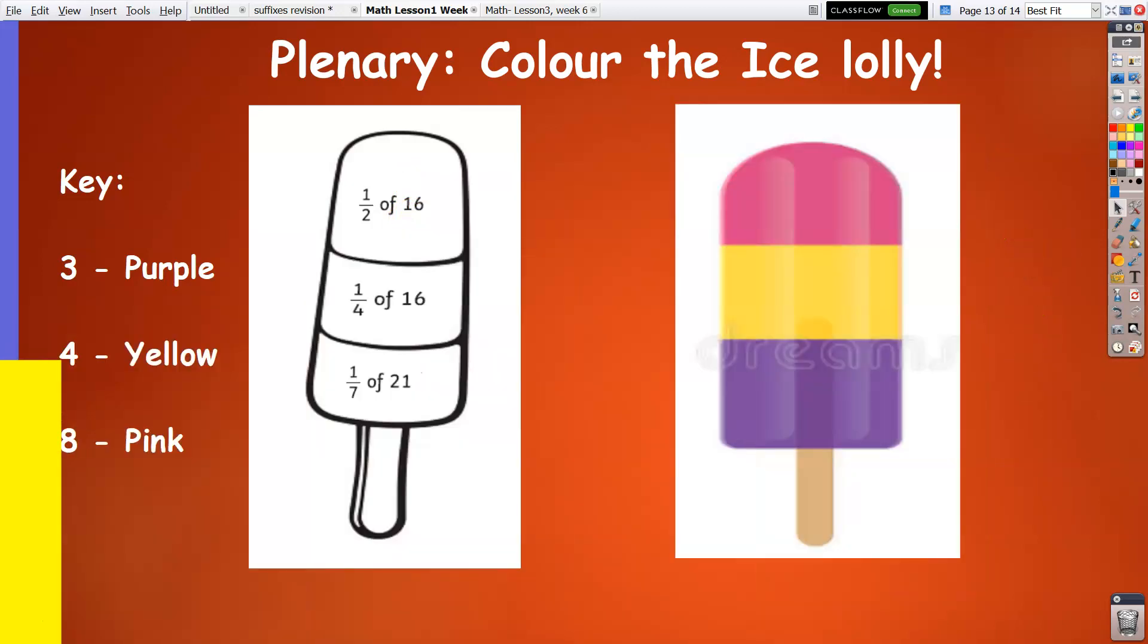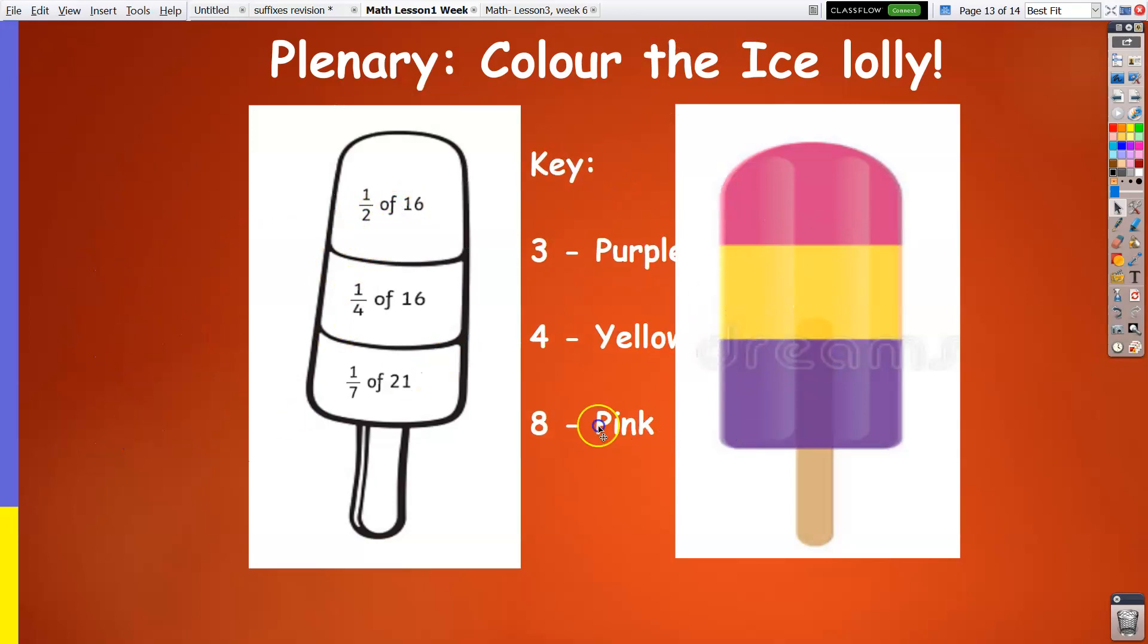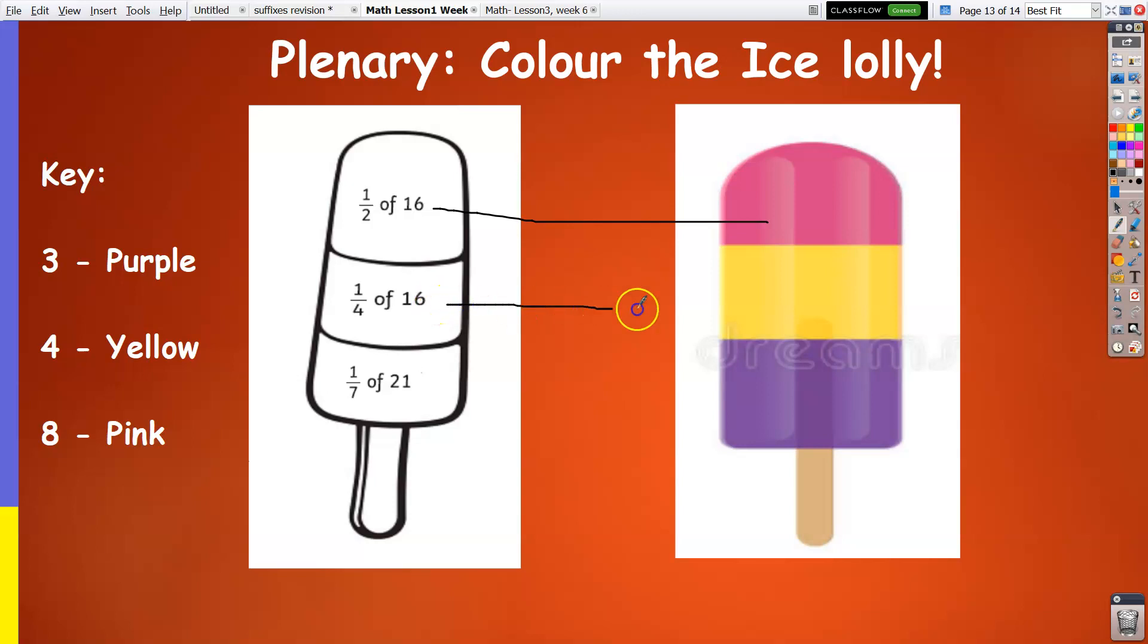Time is up. Let's reveal the answers. For the ice lolly, the pink, we got one-eighth of... the pink is 8. We can copy that from there. The yellow, which is 4, and the purple, which is 3. So one-half of 16 is 8, which is in pink. One-fourth of 16 is 4, which is yellow. And one-seventh of 21 is 3, which is in purple.